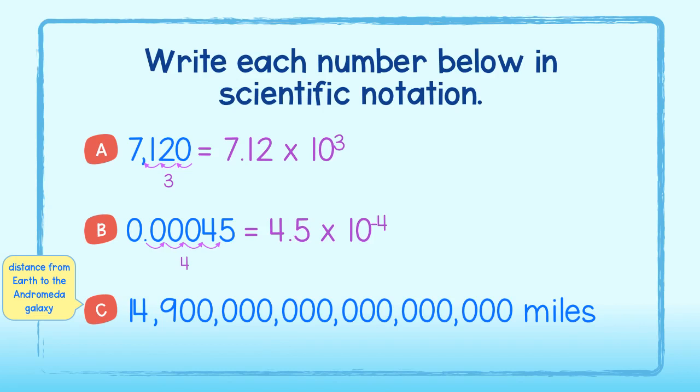Now, how many miles away is the Andromeda galaxy from Earth? Well, we can move the decimal point to the left 19 times. This results in 1.49 times 10 to the 19th power miles away. That was much easier than writing out all of those zeros. Good job.